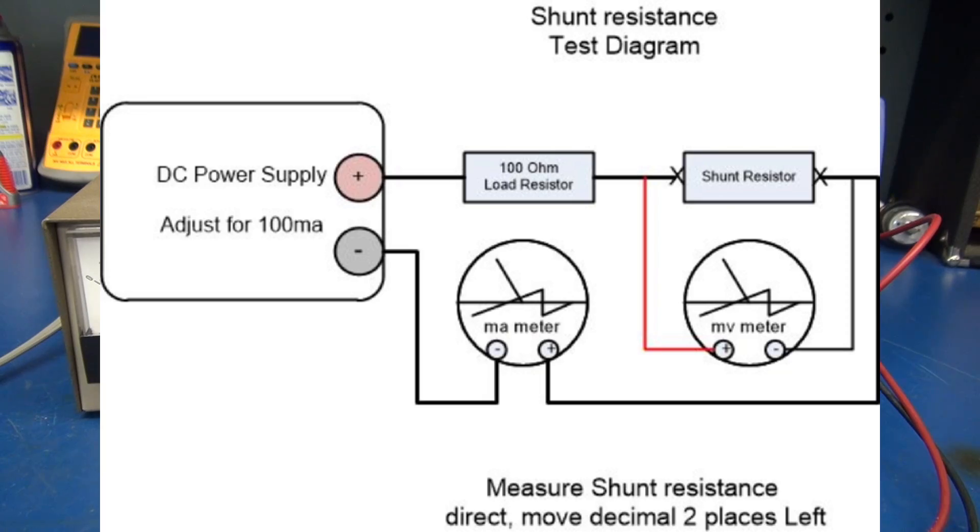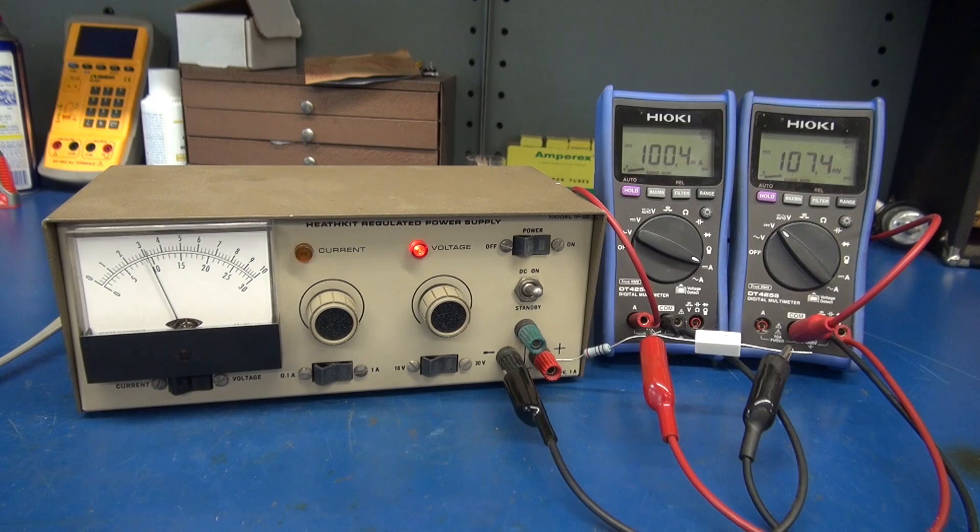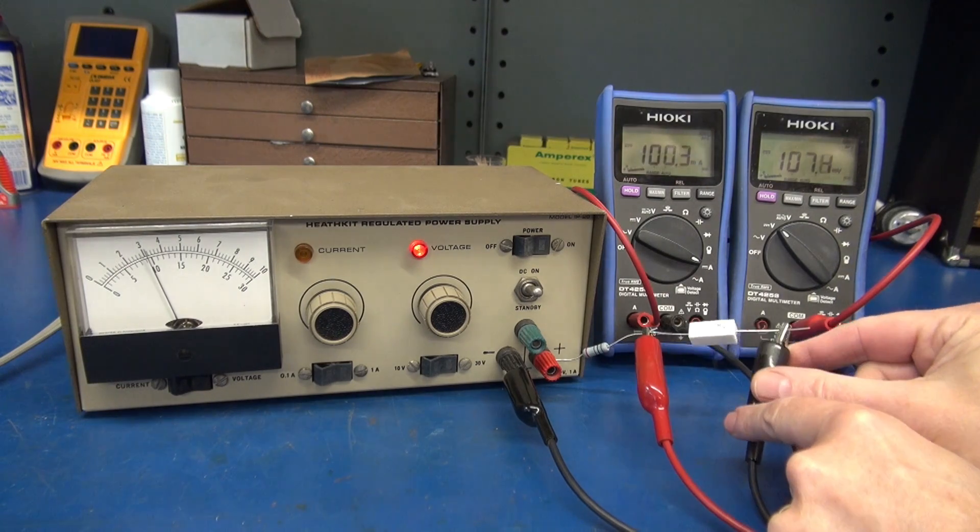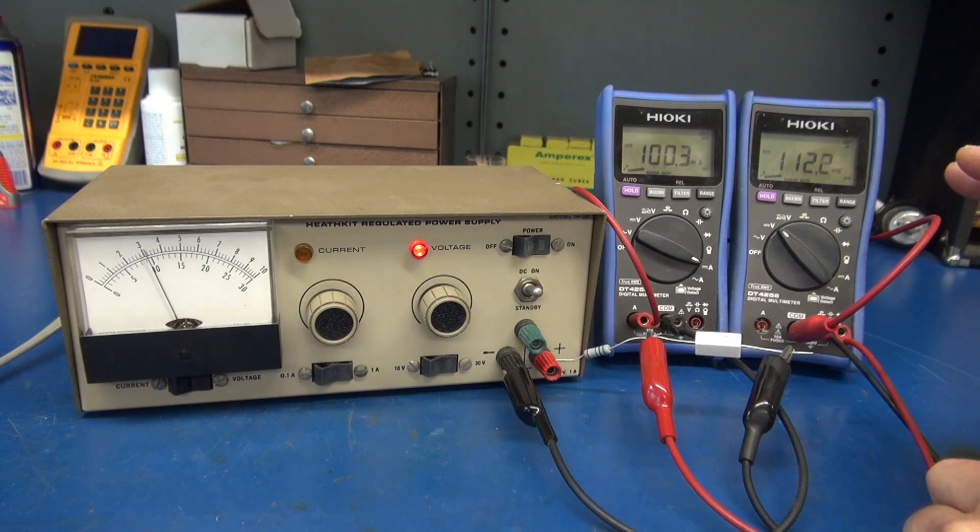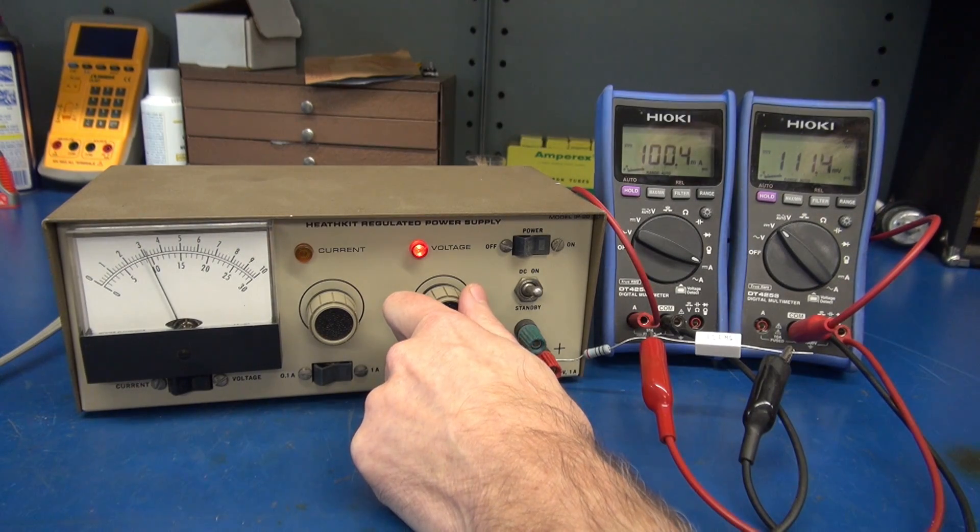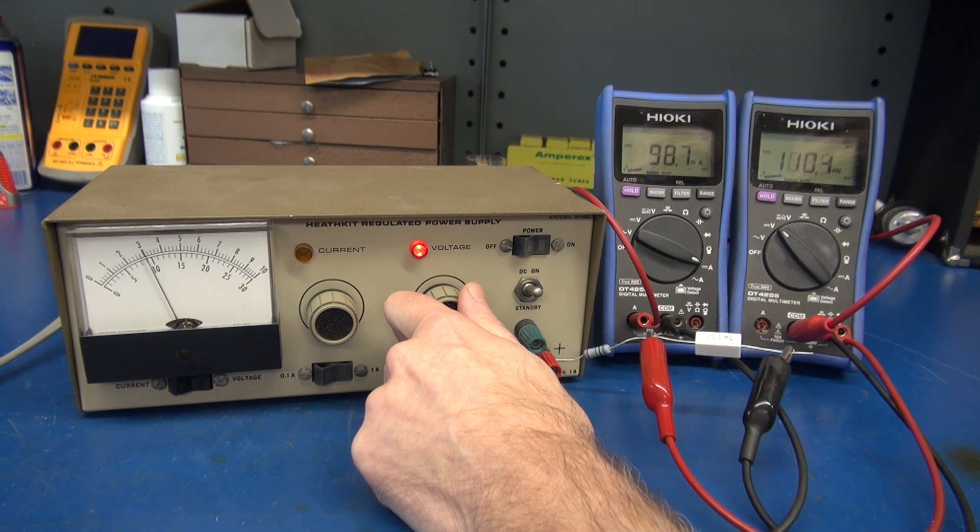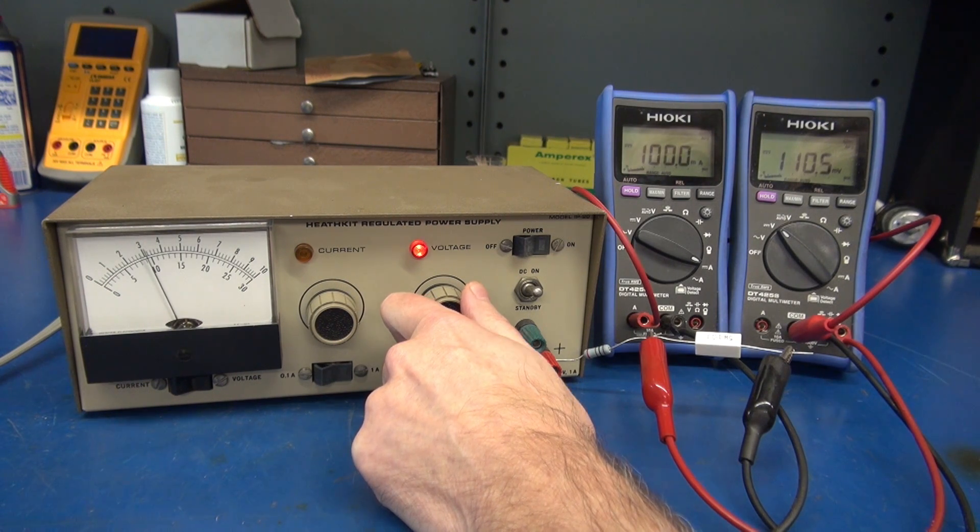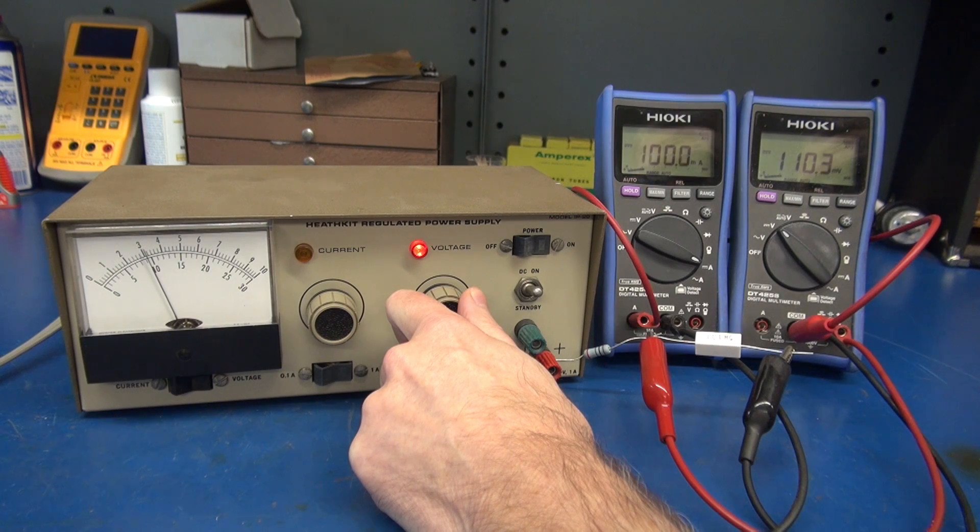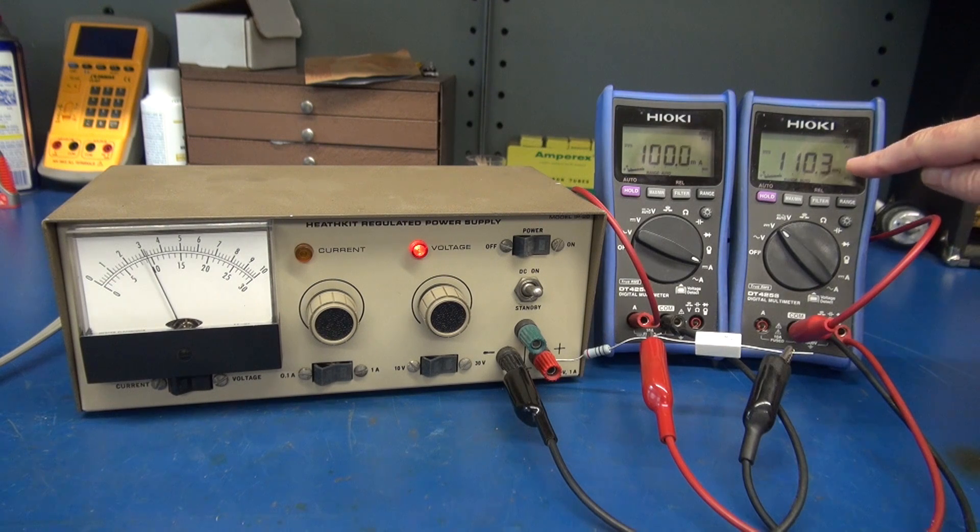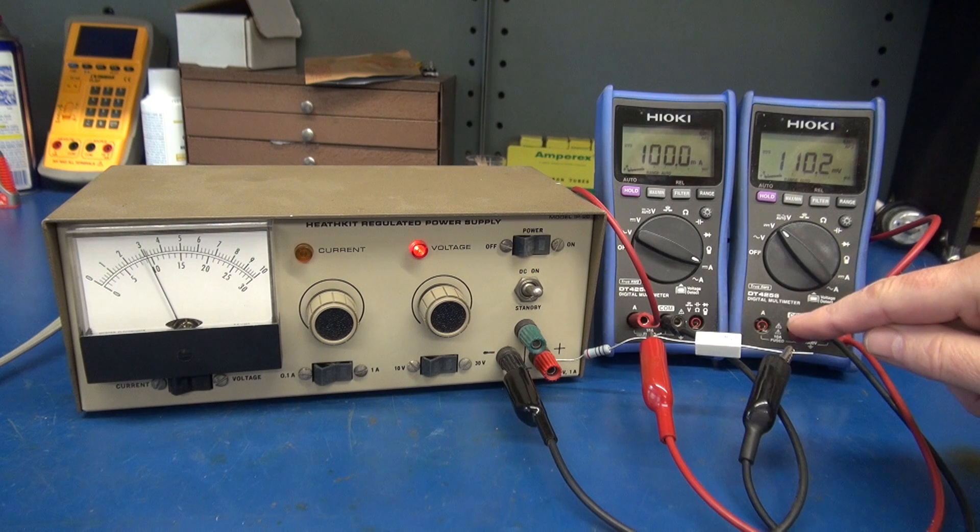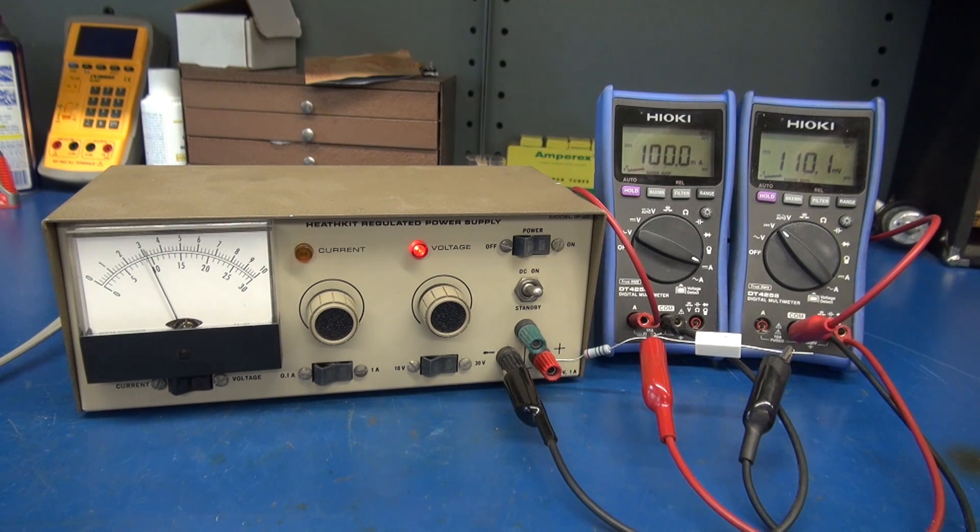Okay, now post the test setup, you'll see the variable power supply, milliamp meter, and millivolt meter. We're gonna start our test with the one ohm resistor that has not been modified. We're simply going to dial in the power supply until we see 100 milliamps on the current meter. Once you see the 100 milliamps, then you take the millivolt reading and move that decimal two places to the left. So in that case, this resistor is actually 1.1 ohms.